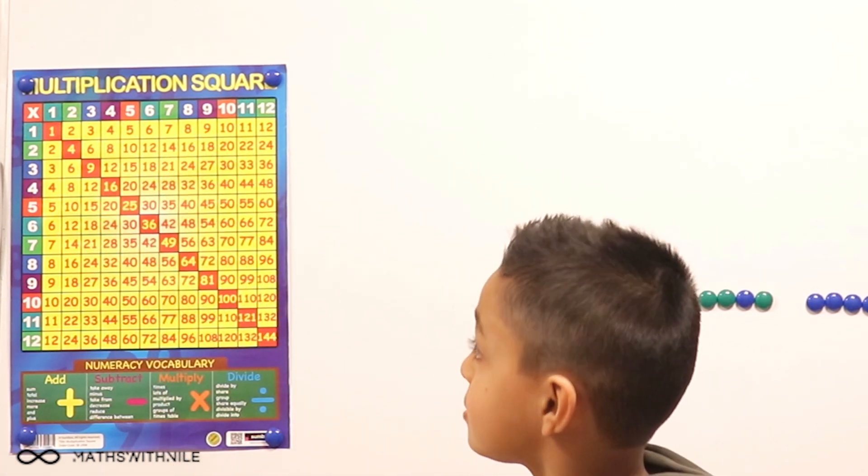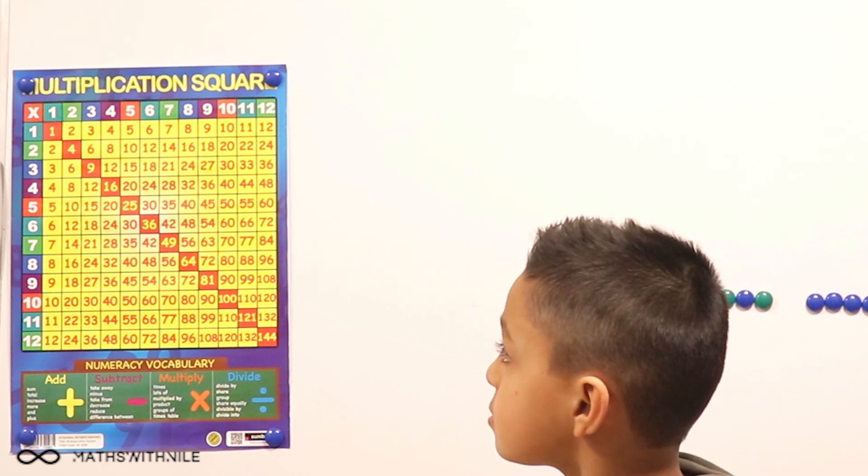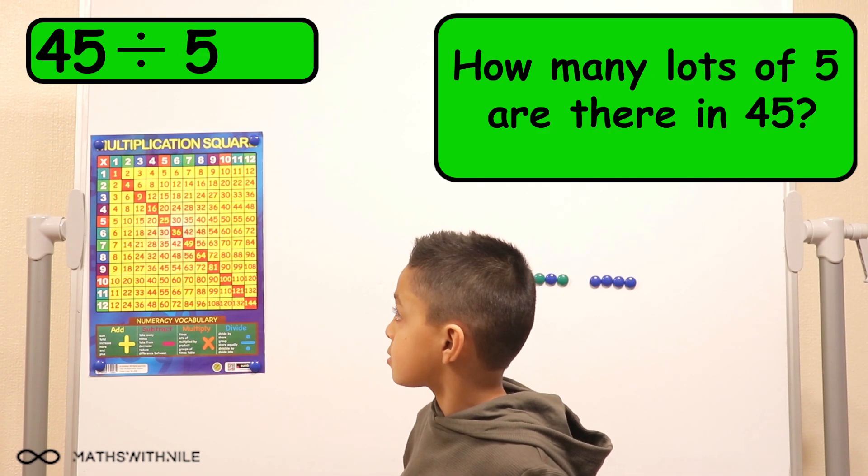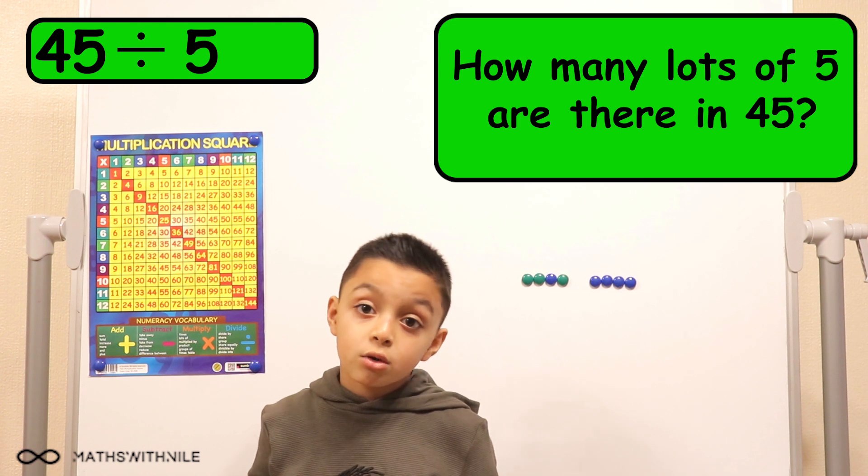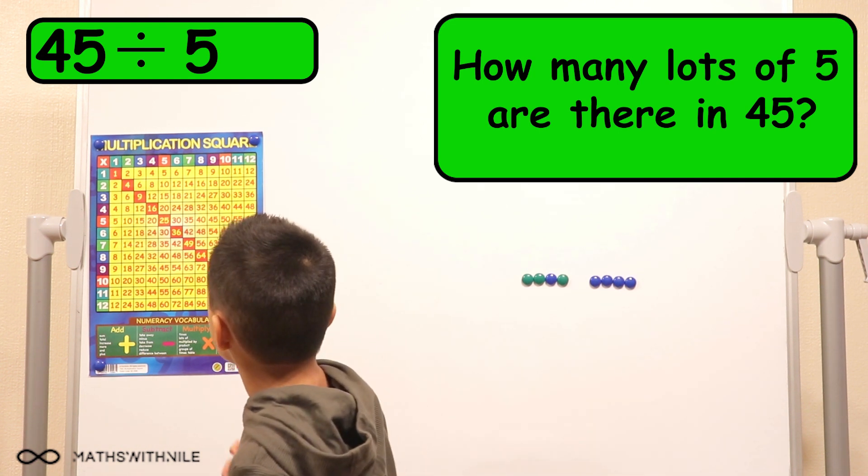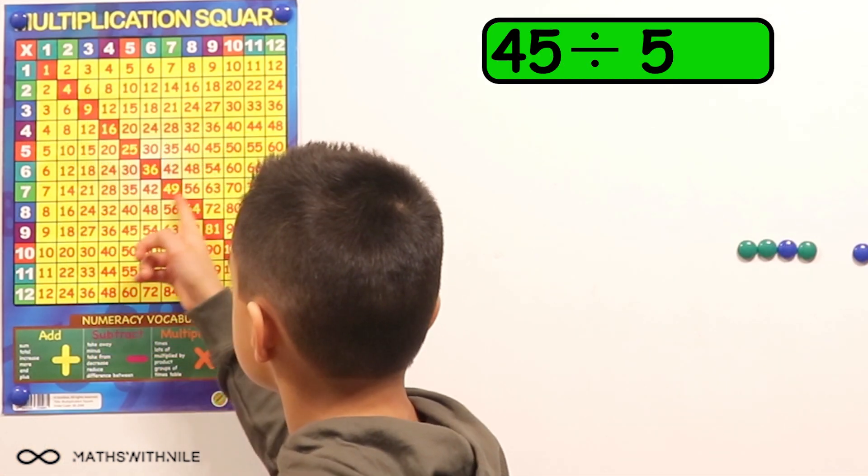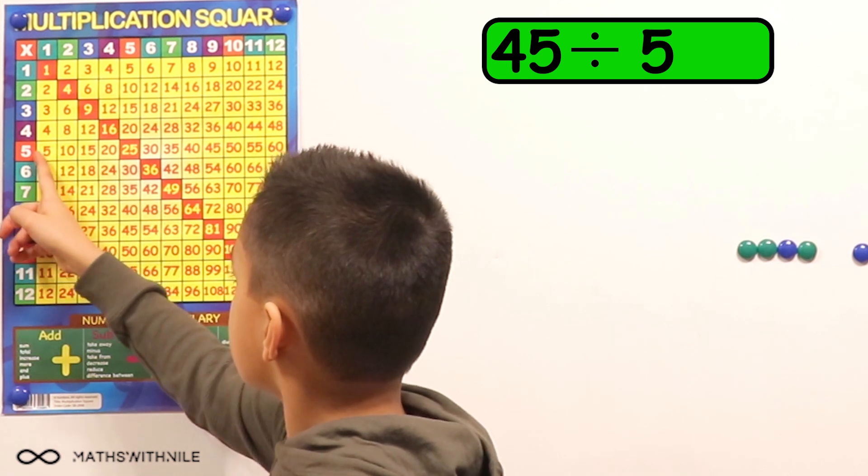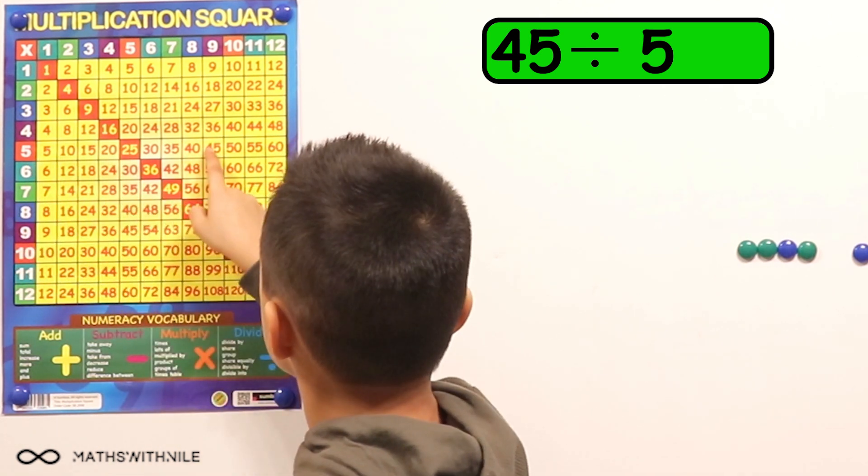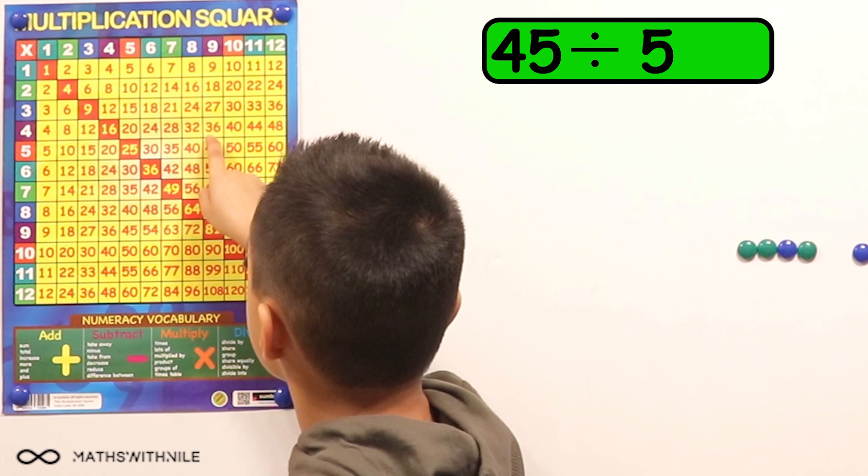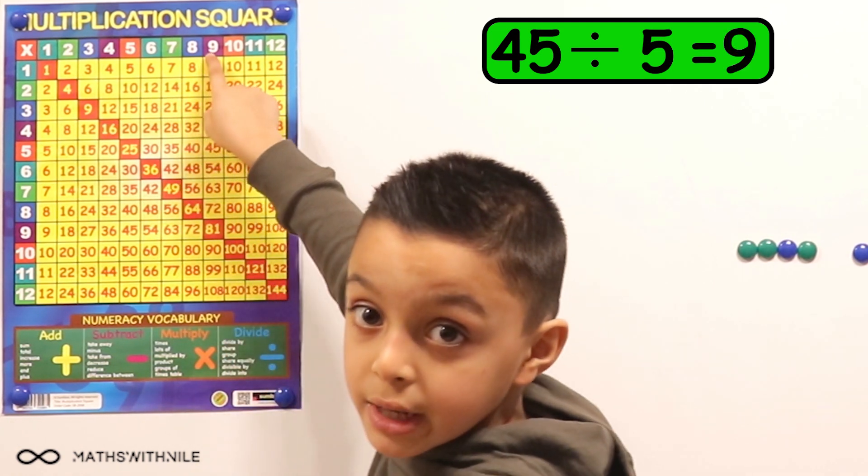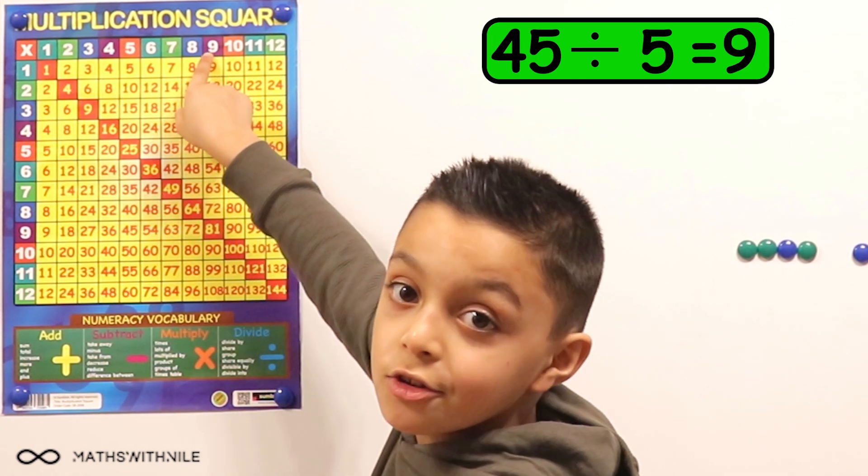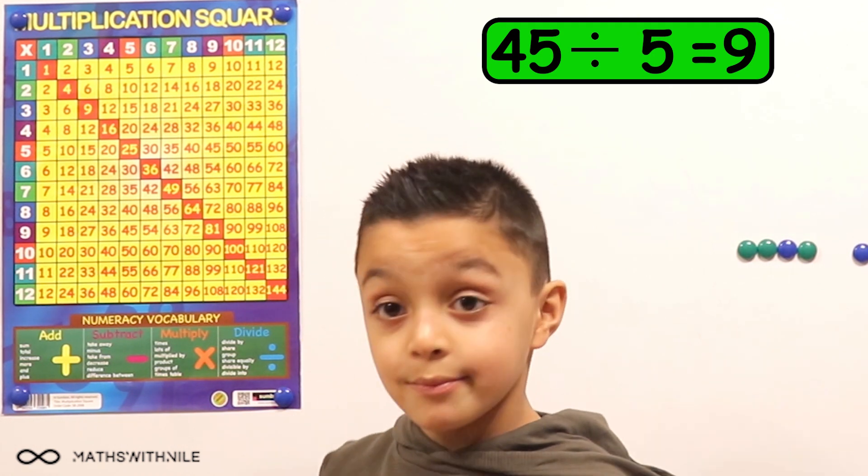So using that same method, using the grid again, what about 45 divided by five? 45 divided by five? So go to the five times table. Five. Yes, go across until you find 45. 45 divided by five equals nine. Because I went up and it has a nine at the top, so it equals nine. Okay, very good.